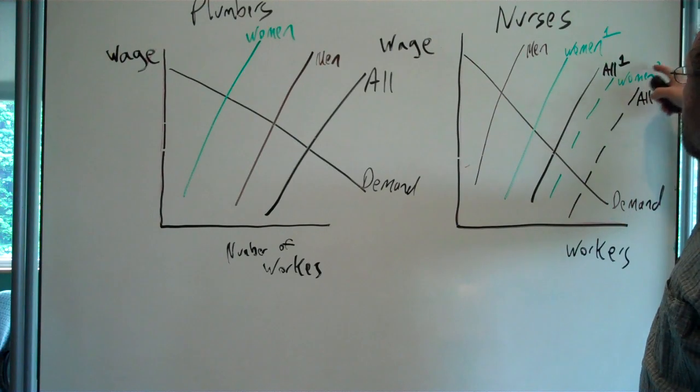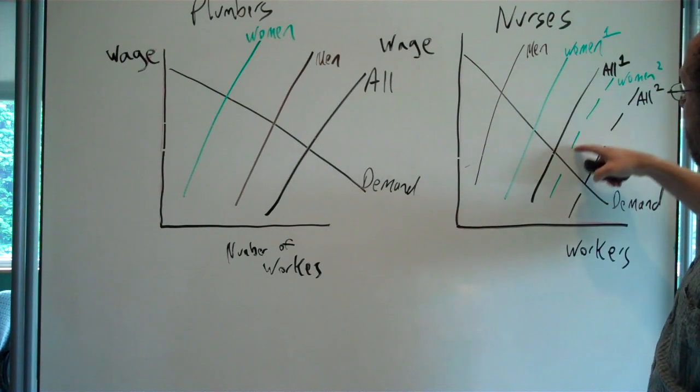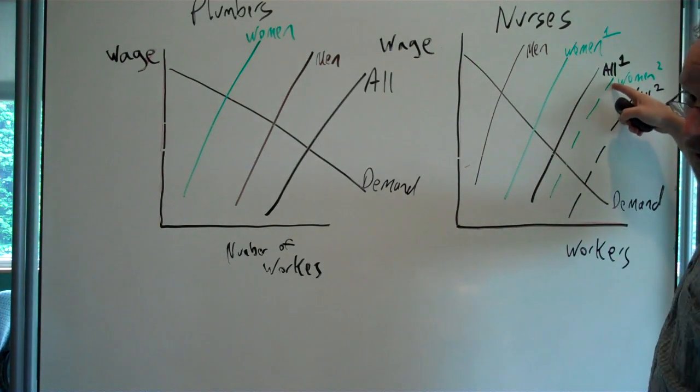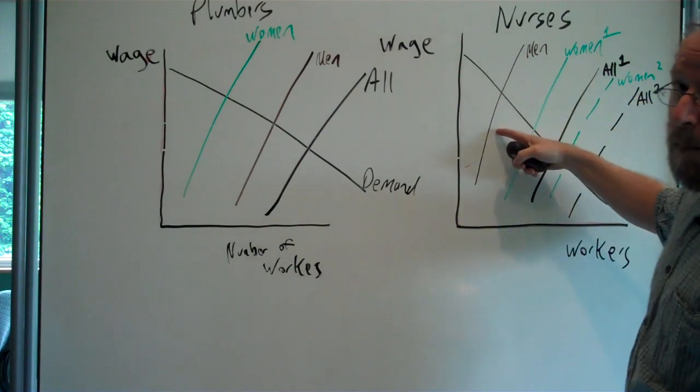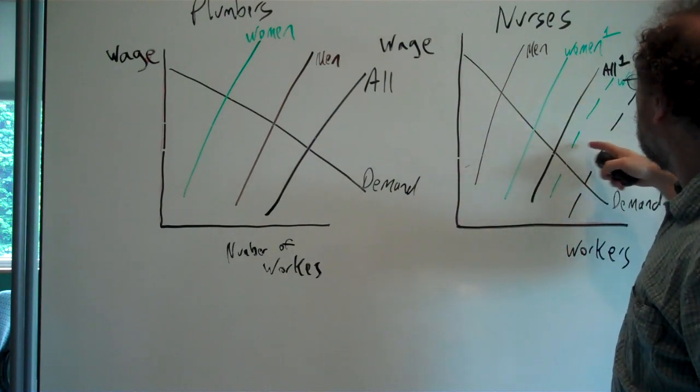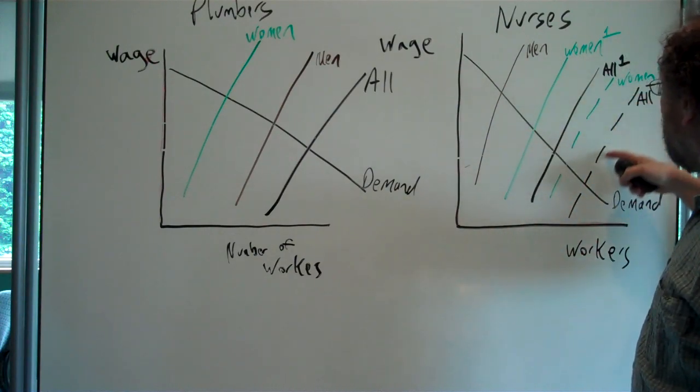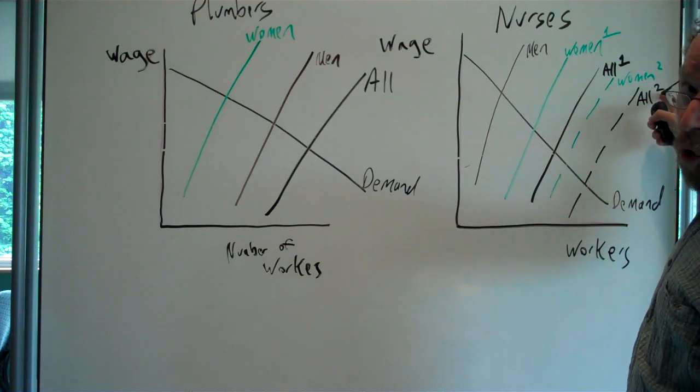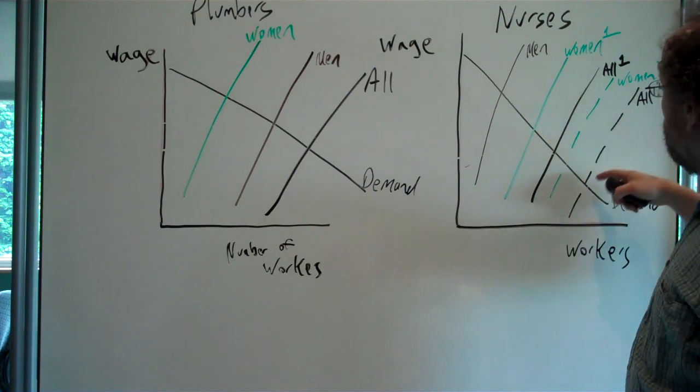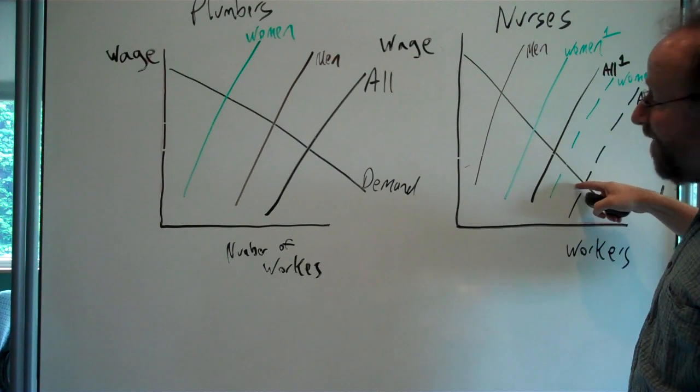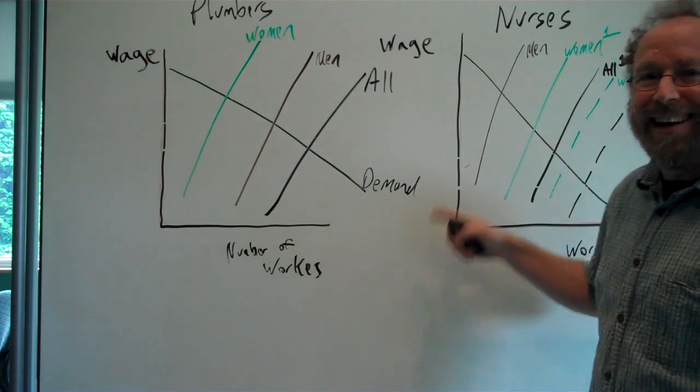Labor supply for women, this is the new labor supply with discrimination for women. You still have men working as nurses. So you get a new labor supply curve, which I've called all two. The new labor supply for nursing has a wage down here.